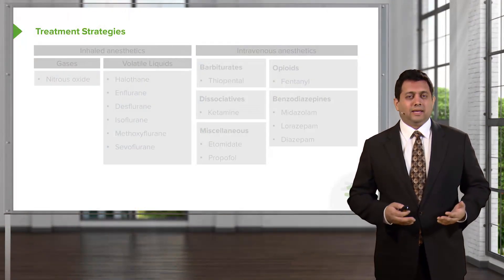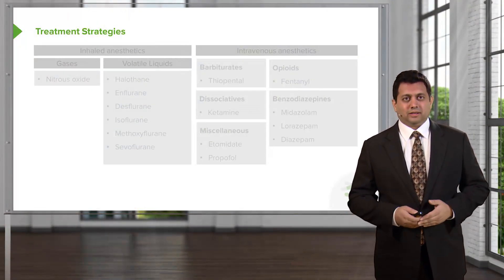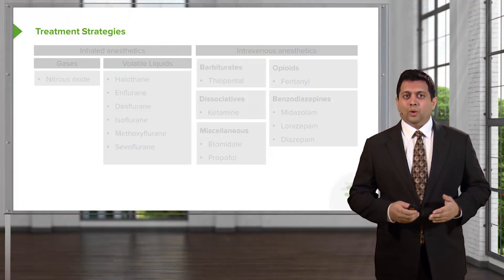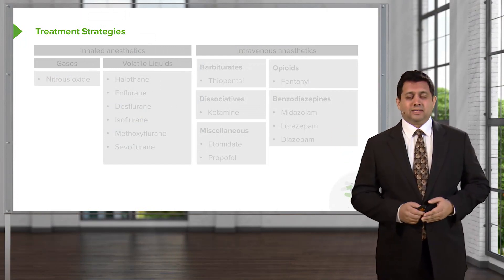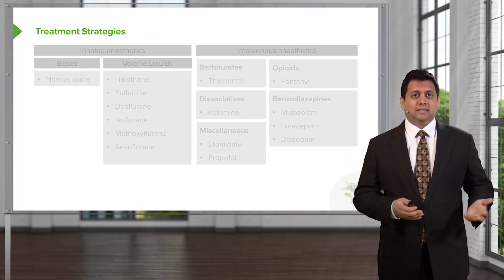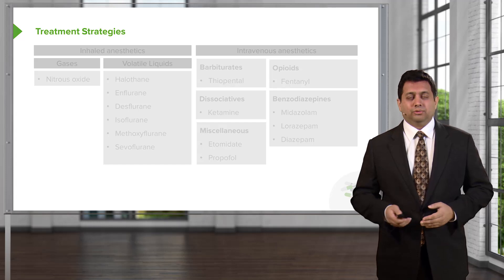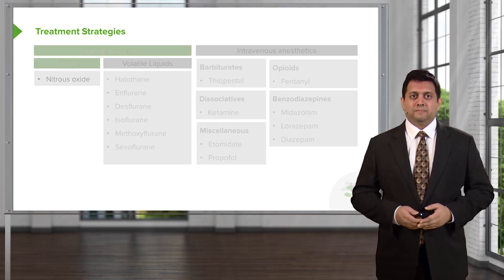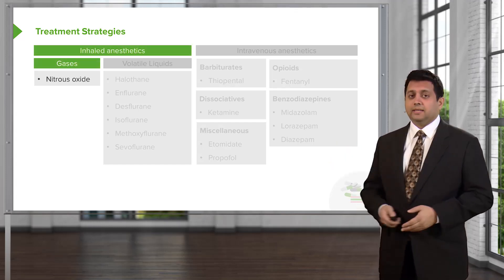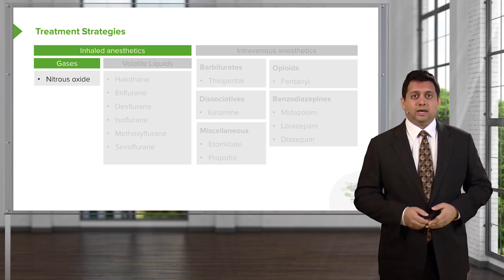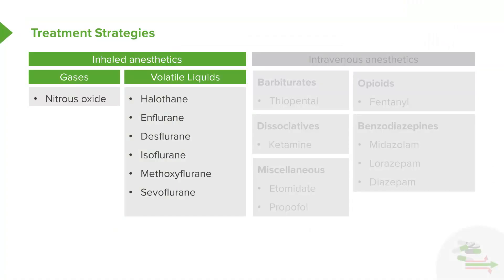Anesthetic medications undergo a number of treatment strategies. One of the treatment strategies is to use inhaled anesthetics, and another way to anesthetize someone is through intravenous anesthetics. Inhaled anesthetics can be gases like nitric oxide, or they can be the volatile liquids that are shipped in liquid form, but eventually become a gas and are inhaled.